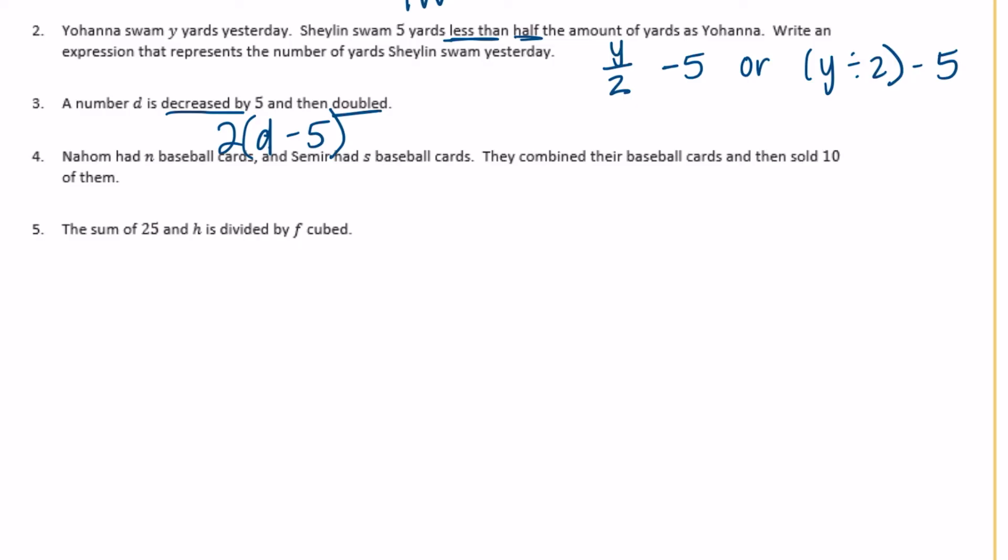Number 4. Nahom had N baseball cards and Samir had S baseball cards. They combined their baseball cards and then sold 10 of them. So they combined them, which means they added them, then sold, so subtracted 10 of them. So let's add N plus S, both of their baseball cards minus 10. We don't necessarily need those parentheses because we would add to begin with.